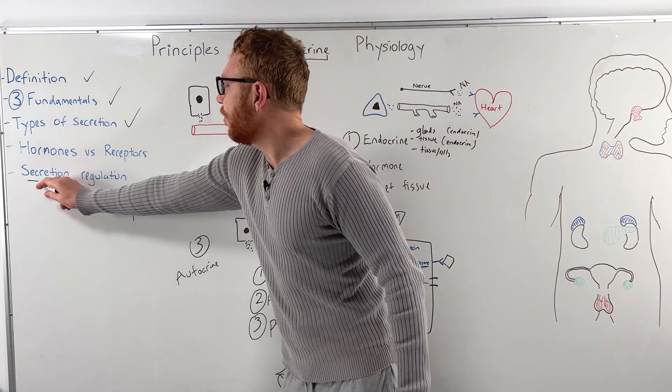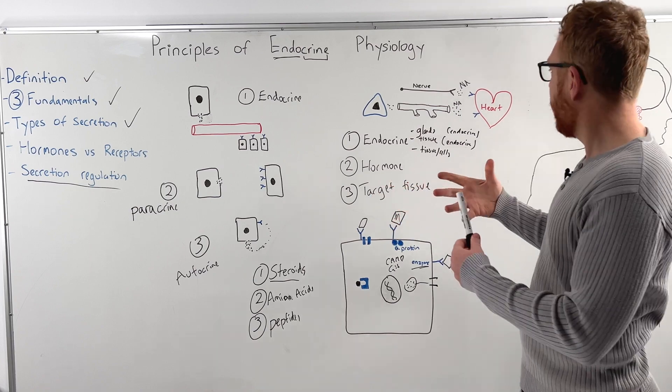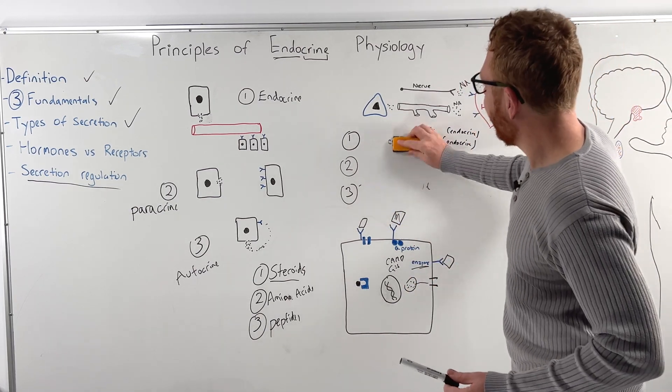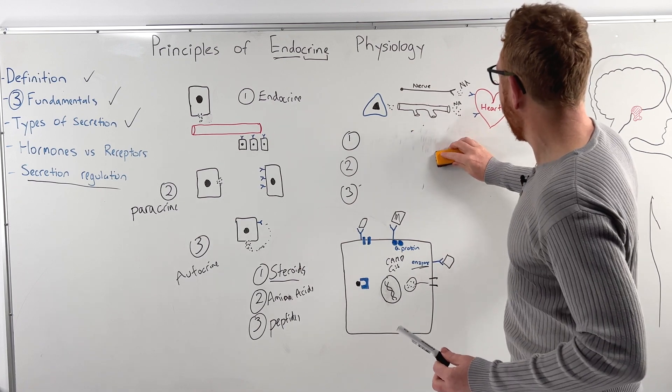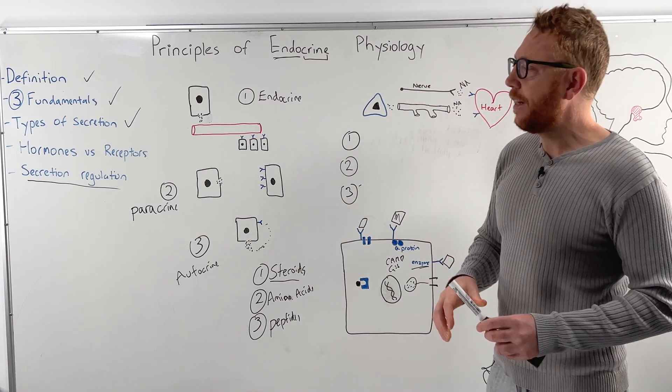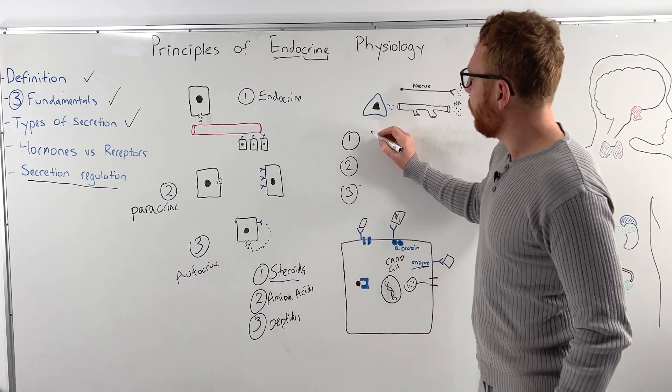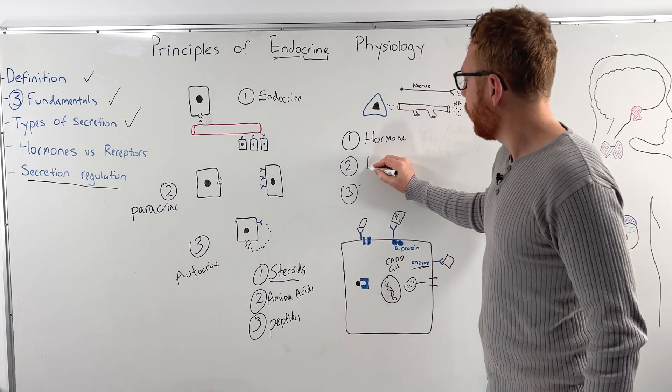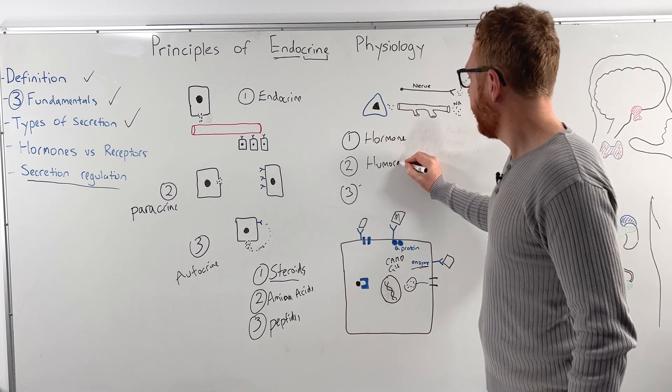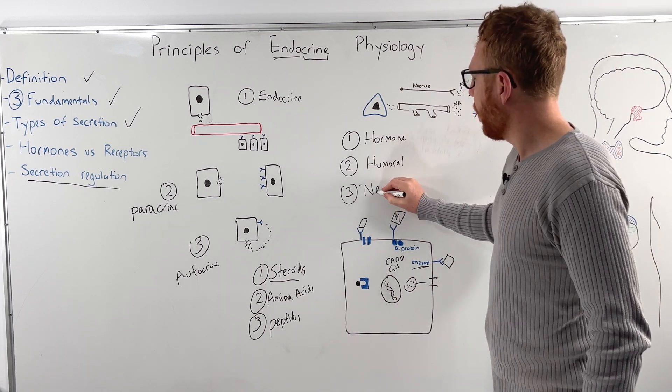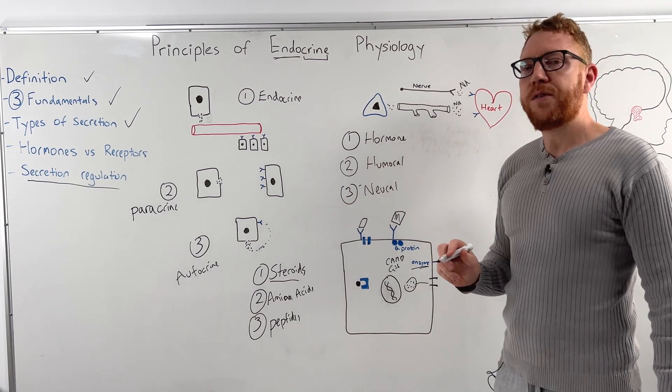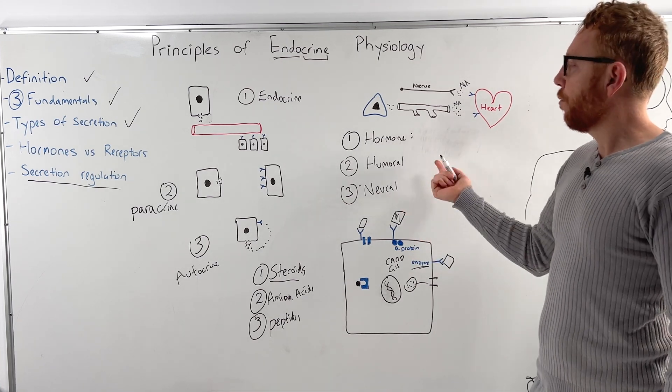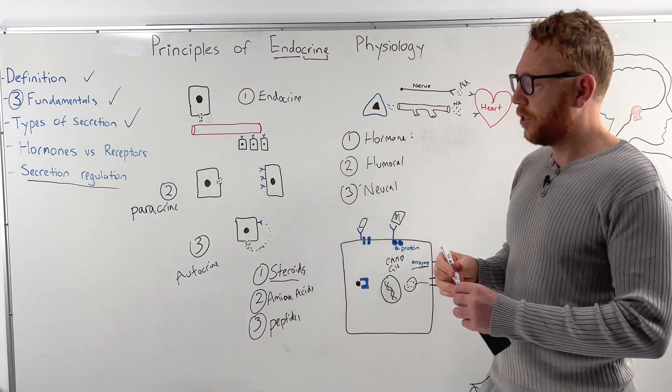And then finally, we're left with how are hormones in the body, how do we regulate this? Again, we have three, so there's a lot of threes today in the endocrine system. So how do we regulate on secretion? Well, we can regulate by hormone, hormone levels, we can regulate by humeral, I'll get to that in a second, and we can regulate by neural. Let's start with hormone. So basically, just the level of the hormone in the body will decide on how the release is impacted.